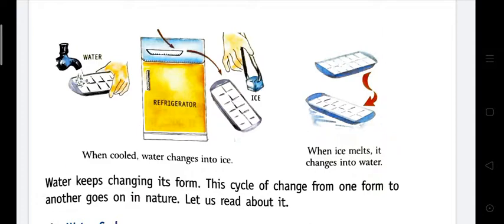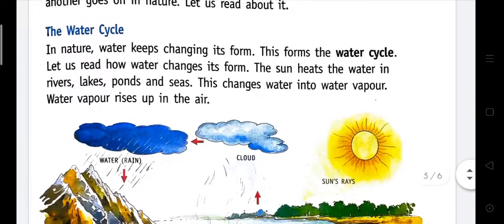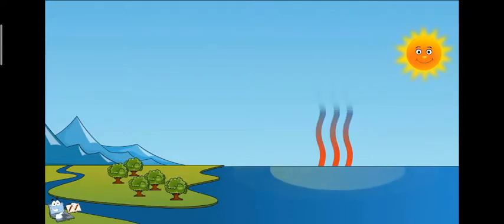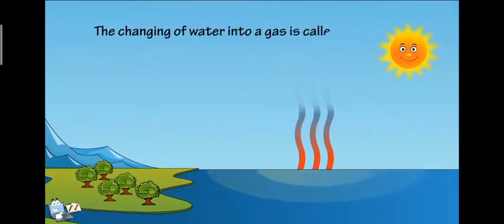In nature, water keeps changing its form — this forms the water cycle. Let us read how water changes its form. The sun heats up the water in ponds, lakes, seas, and rivers. The water changes into water vapor in the air, and this is called evaporation.